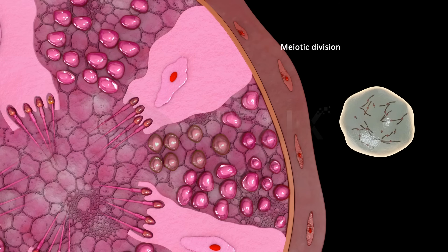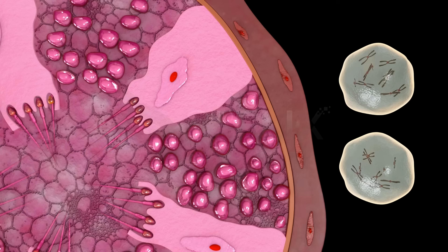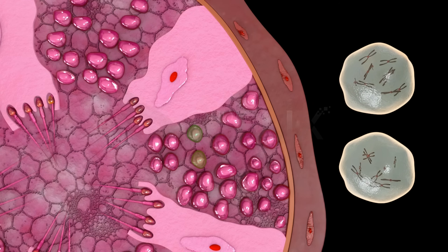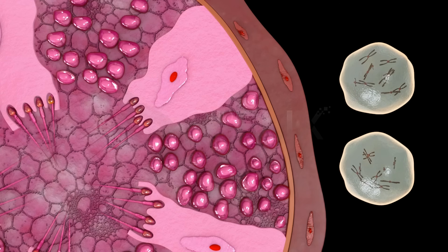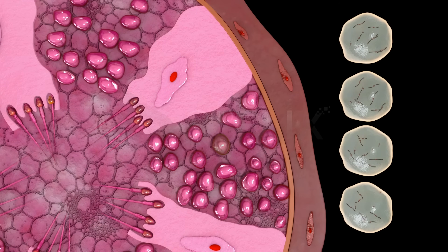The type B spermatogonia become double in size and differentiate into the primary spermatocytes. The primary spermatocyte is a diploid cell. It undergoes meiosis I and produces two secondary spermatocytes. The secondary spermatocyte is a haploid cell containing 23 chromosomes. Each secondary spermatocyte then undergoes meiosis II and produces two spermatids. Thus, four equal-sized haploid spermatids are produced from each diploid primary spermatocyte.